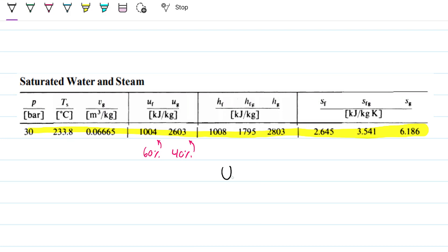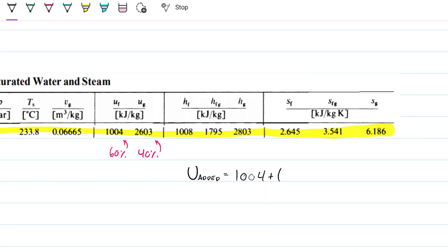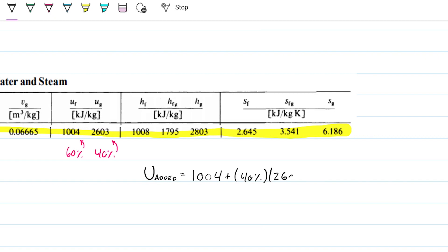Internal energy for the added water will be my UF plus the quality, 40%, times the difference, right? So 2603 minus 1004. This gives me that the added water is 1643.6 kilojoules per kilogram.